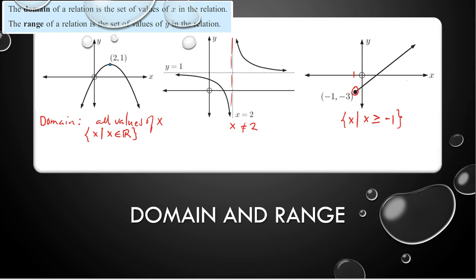And then we have range. The range of a relation is the set of values of y in the relation — or I should say, the set of allowed values of y. For this example, the y goes from 1 here. So the set of y such that y is less than or equal to 1.